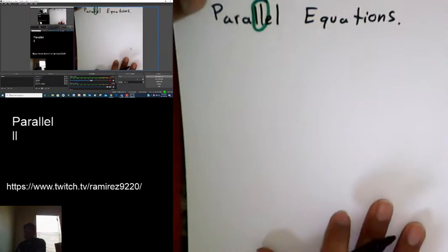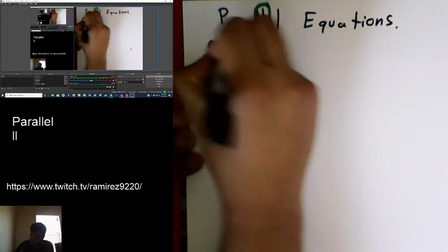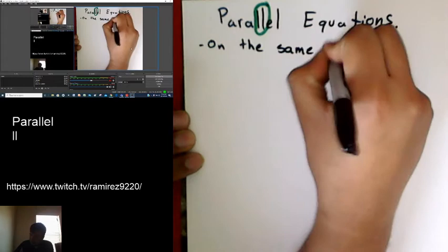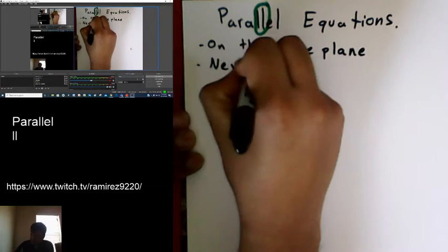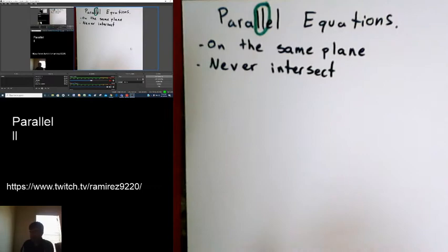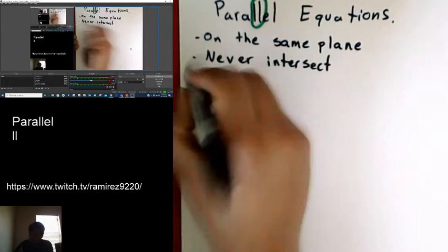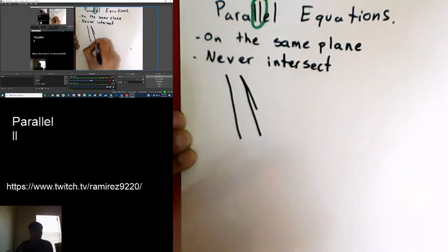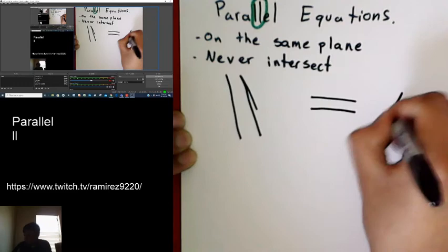Parallel equations are on the same plane and they never intersect. They never touch. We could have lines that look like that, lines that look like that, and so forth.